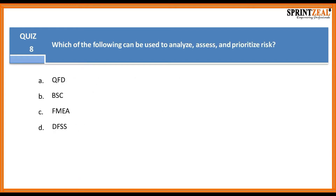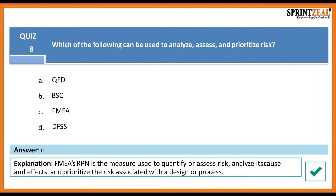Question eight: Which of the following can be used to analyze, assess, and prioritize data? Is it QFD, a balanced scorecard, a failure mode effect analysis, or design for Six Sigma? The answer is C. An FMEA's RPN is the measure used to quantify or assess the risk, analyze its cause and effects, and prioritize the risk associated with a design or process.